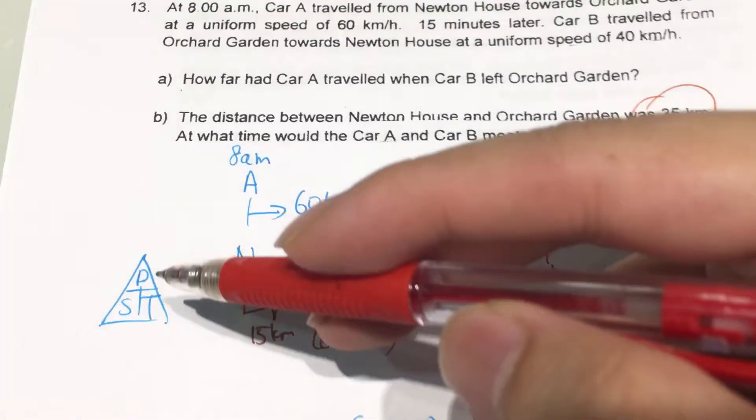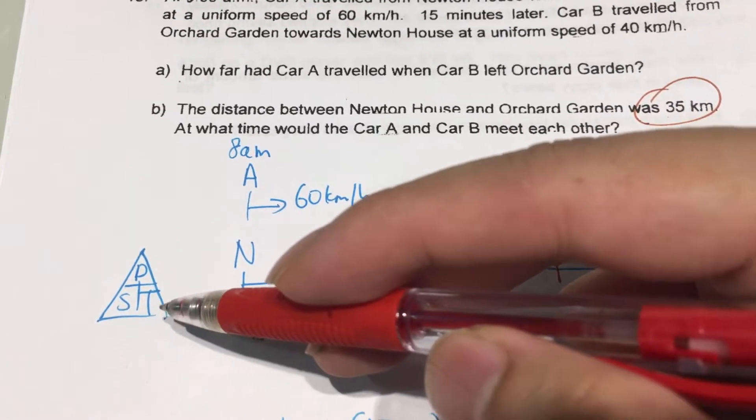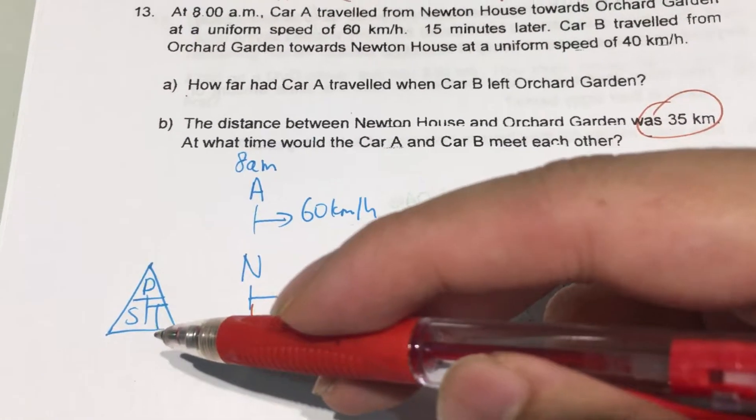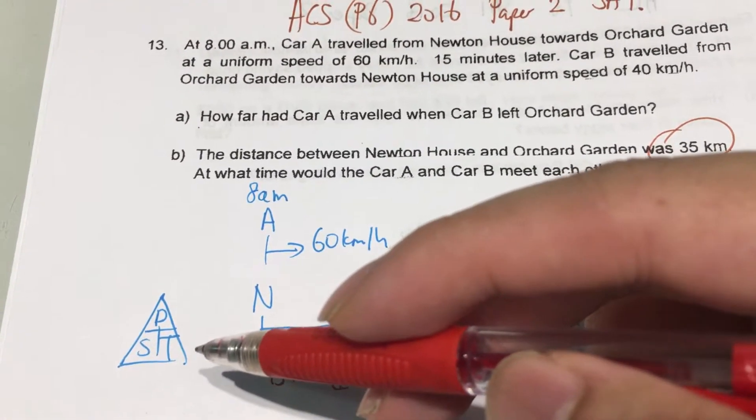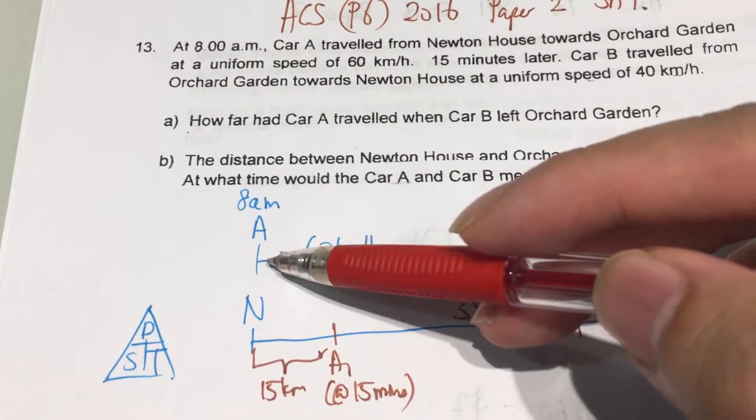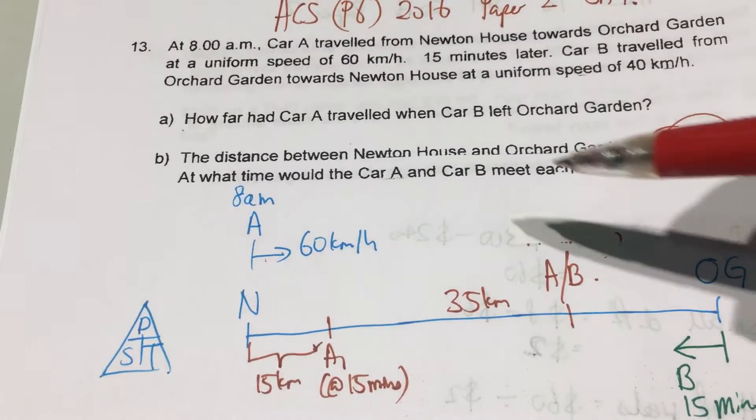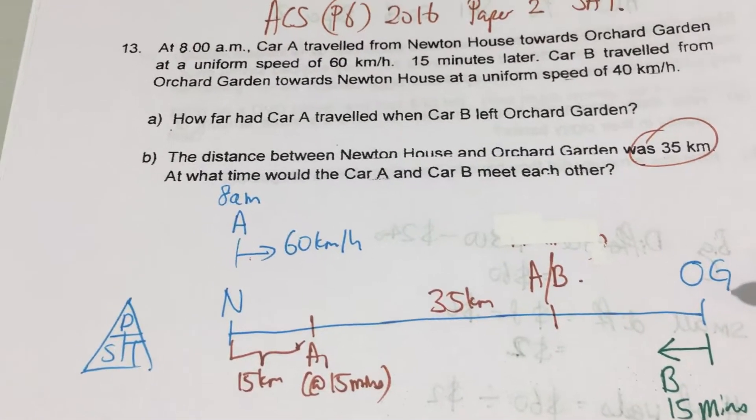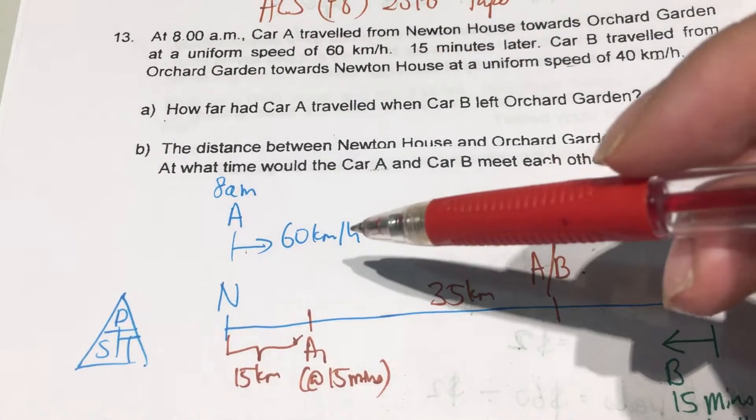And I always like to do this, DST, to remind me of the formula for speed. Okay, so at 8am, car A, I will draw facing there since it's moving to OG at 60km per hour.